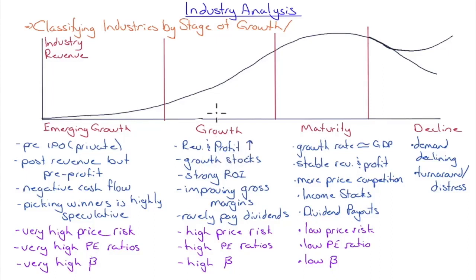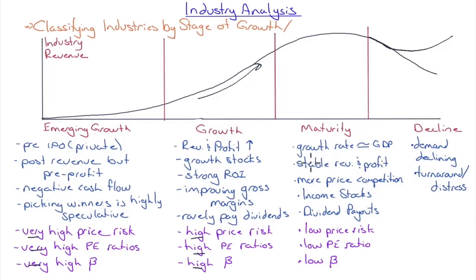In the growth stage, revenues and profits increase — these are referred to as growth stocks. They show strong return on investment and improving gross margins, but rarely pay dividends since they reinvest back into growth. They still carry high price risk, high P/E ratios, and high betas. In maturity, growth approaches the GDP growth rate, revenue and profit stabilize, there is more price competition, and these become income stocks — with dividend payouts, low price risk, low P/E ratios, and low betas. In decline, demand falls and the company may be a turnaround or distress target.